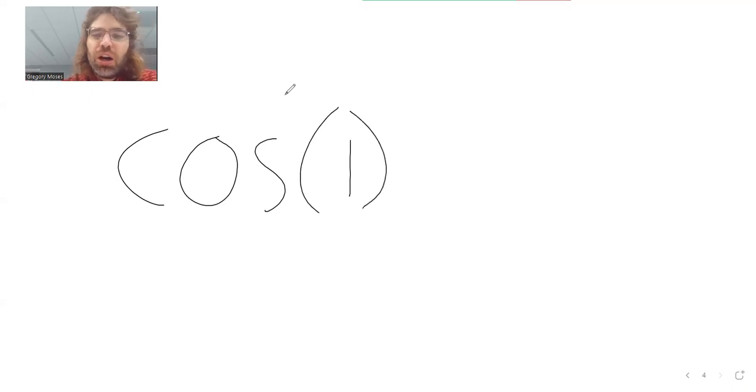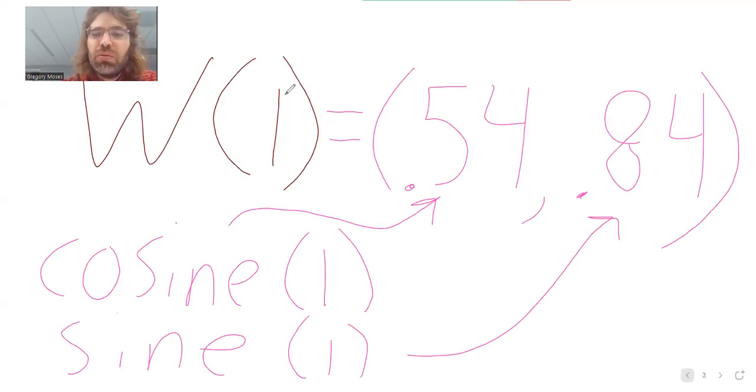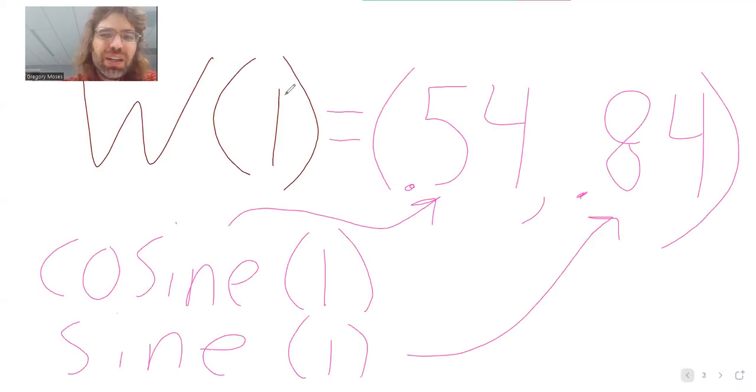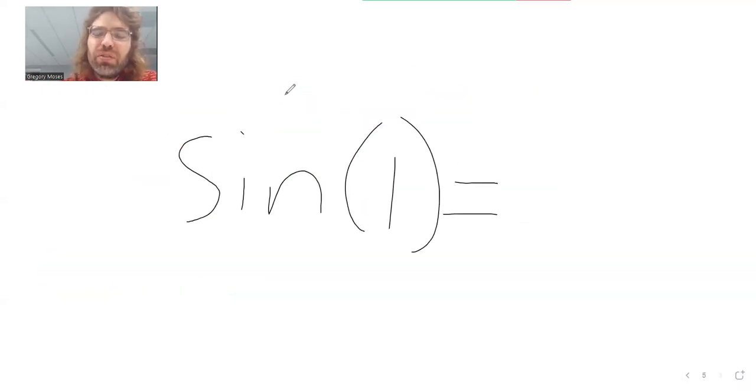The cos of one, the cosine of one, is 0.54. The sine of one is 0.84.